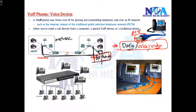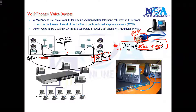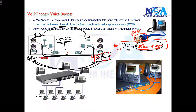Now we are using the same existing network which was built to send and receive data. By adding some modules and connecting some IP phones, I can make calls from my network to another network — let's say one is in the US and one is in India — using the same existing network to send voice or video traffic instead of using the traditional PSTN lines.